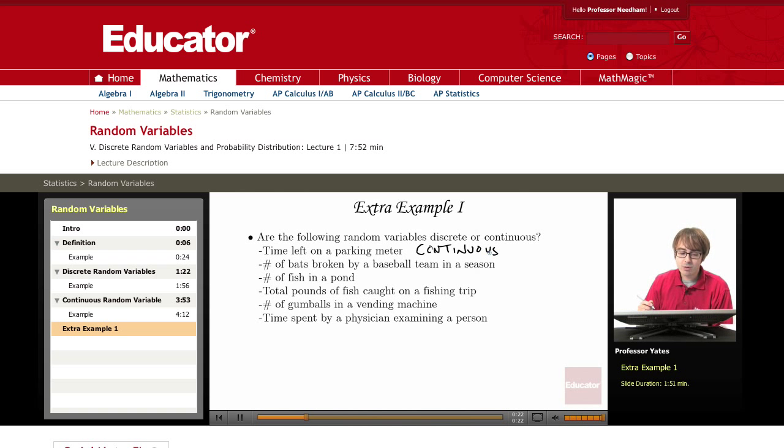The number of bats broken by a baseball team in a season. The key phrase here, number of bats. So what we're going to have is a discrete random variable.